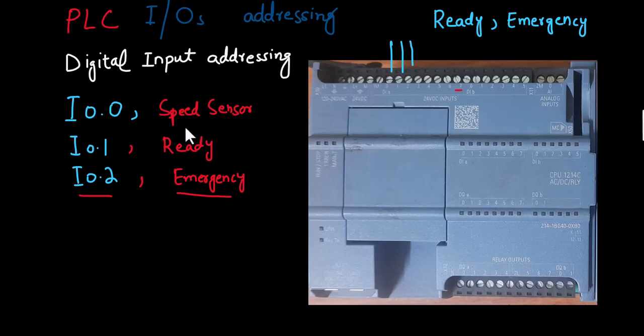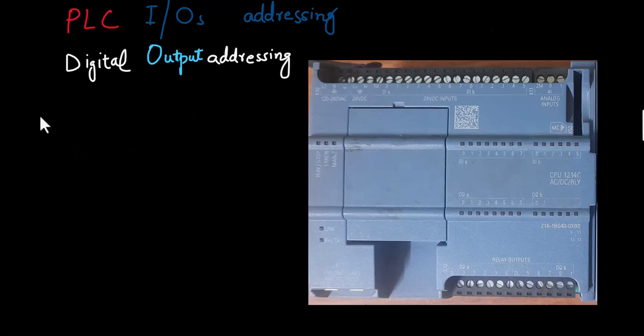Now we are done with the input addressing. Let's talk about the digital output addressing. The symbol Q will be used, and the first digital output channel will be referred to as Q0.0.